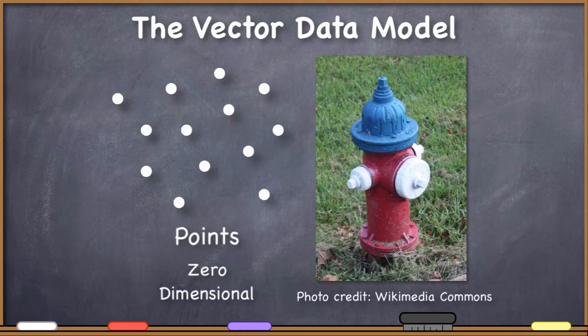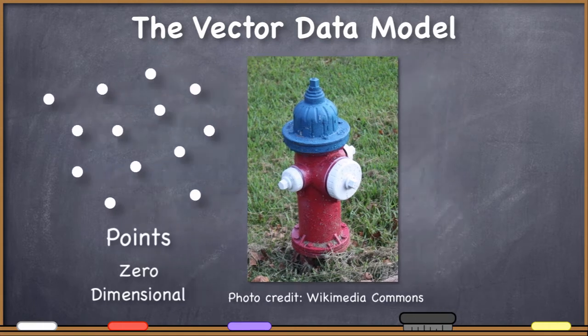We gave an example of how we might use point geometry to represent fire hydrants in GIS. This would certainly let us represent the geographic location of each of these hydrants. But there's also a lot of other aspatial information that you might want to store about the hydrants.